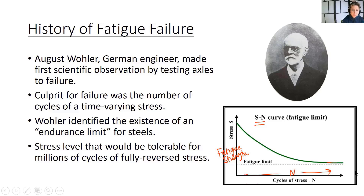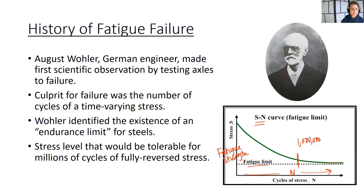This diminishing strength levels off at a certain point called the fatigue limit, also called the endurance limit. Around one million cycles, at least steels exhibit what we call infinite strength — meaning a steel component can withstand an infinite number of cycles beyond one million without its strength diminishing. There are caveats: for example, if something is always subjected to corrosion, you'll never have an endurance limit.